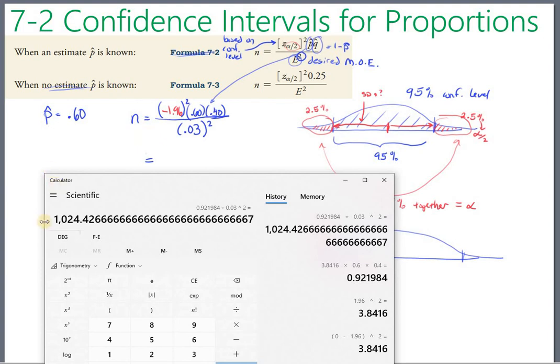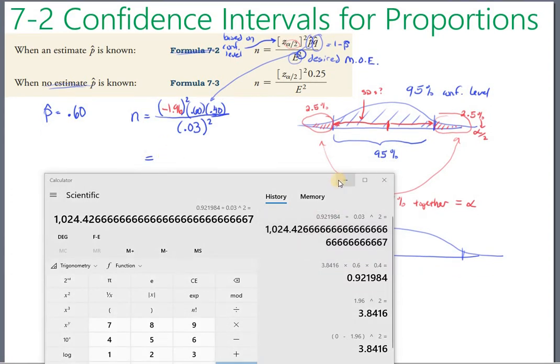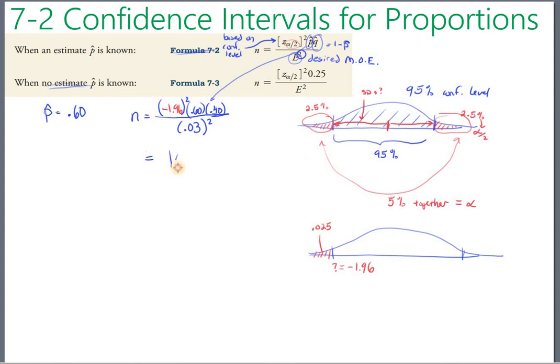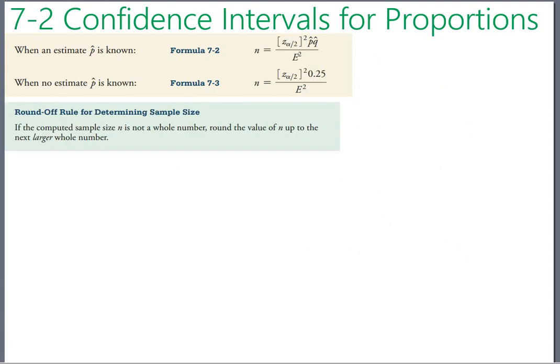Actually, notice 1024 people isn't quite enough. This is the second place in the course, I told you there were two places where you don't round normally, where you round up instead. This is the second one: when you're calculating sample size, 1024 is not enough, so let's go 1025. So you always round up on these. So I'm going to go 1025 people. Okay, and the book even has this written in. If you look in the book they'll say if the computed sample size is not a whole number, go ahead and round up to the next larger whole number.